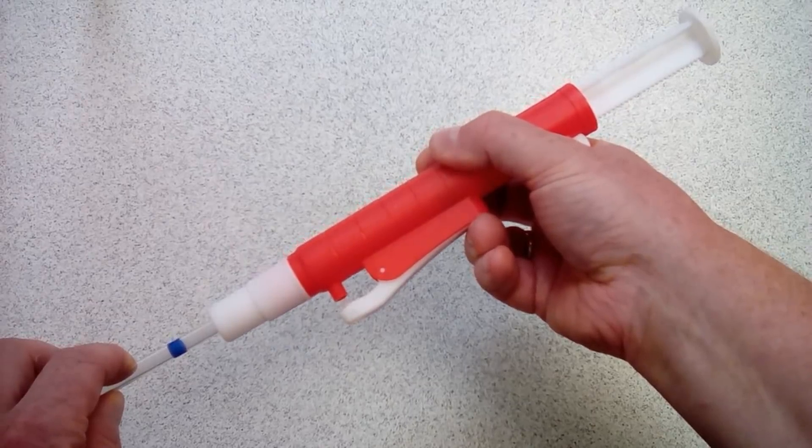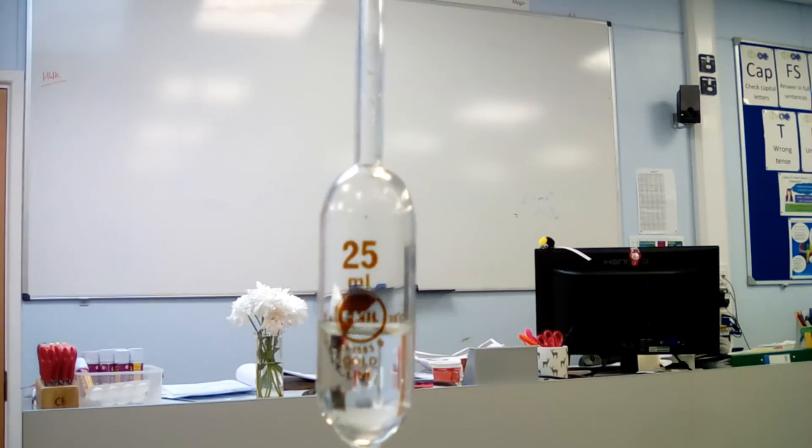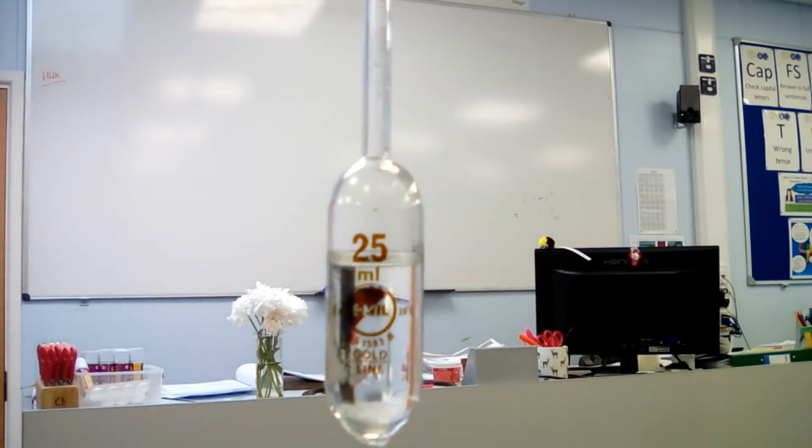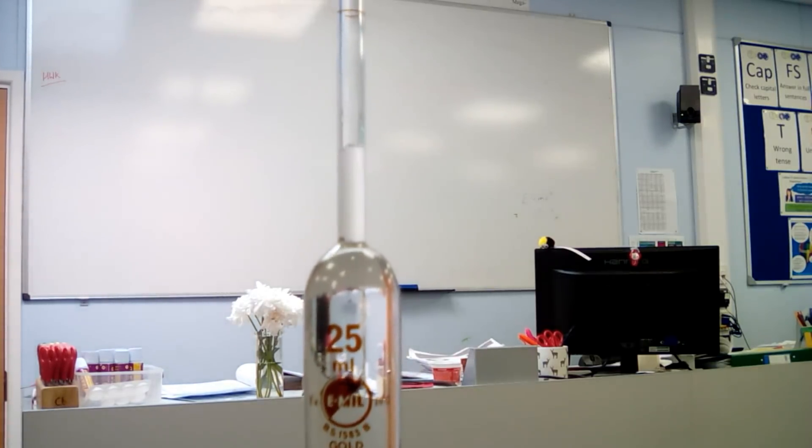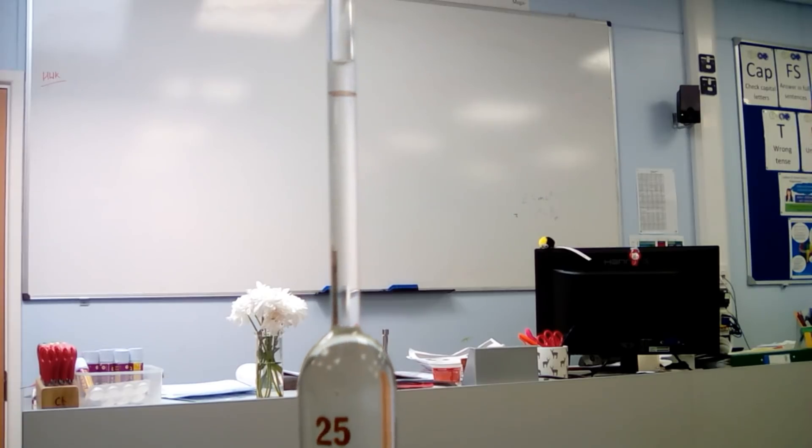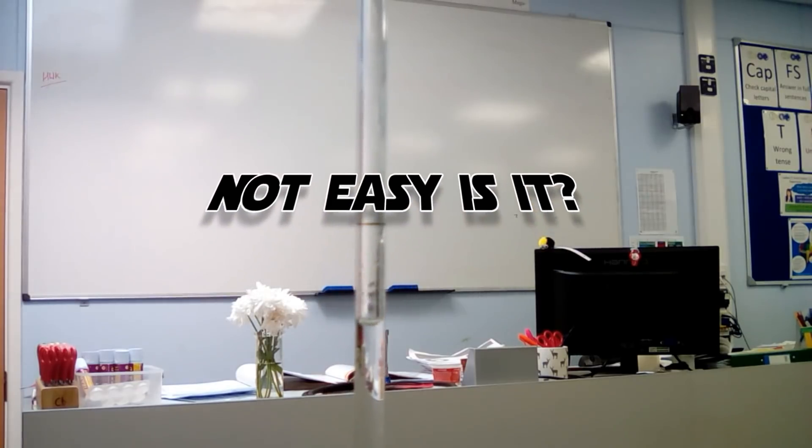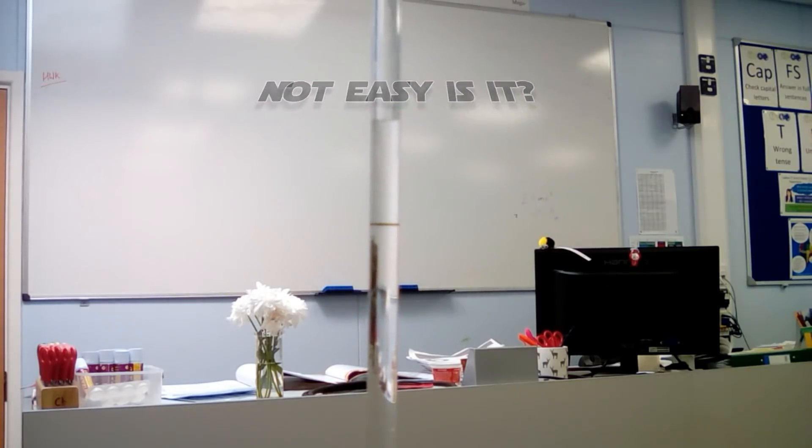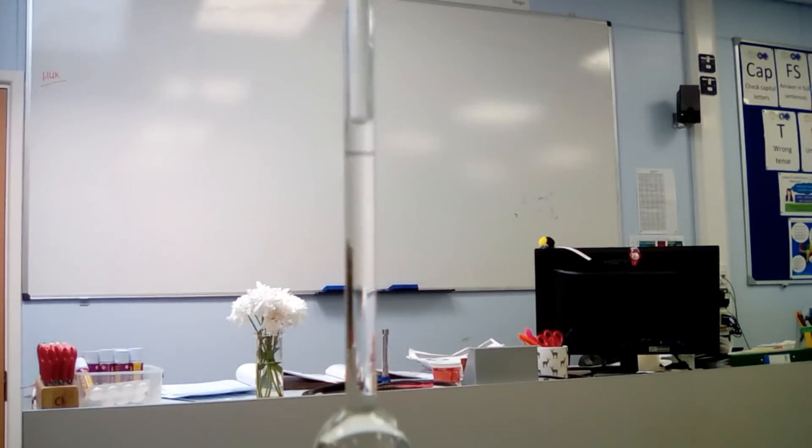With the pipette in the sodium hydroxide, we start to suck up the sodium hydroxide into the bulb. We want to get the level just right. You can see we've gone over there, so we release a little bit of air out and we want the meniscus to be just touching like so.